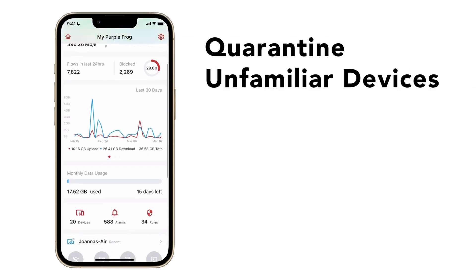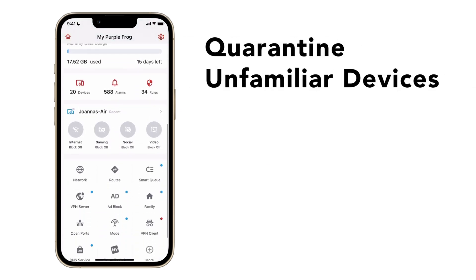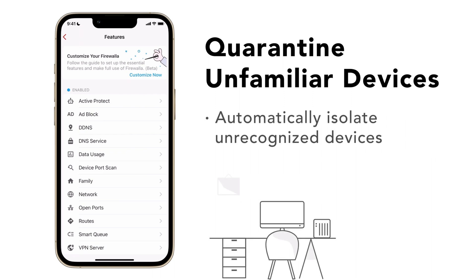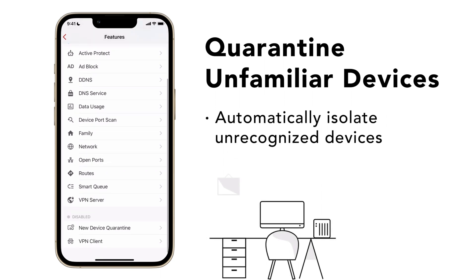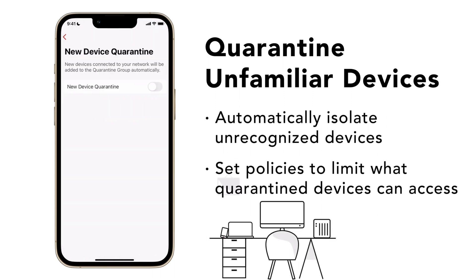Another way to organize your network is to turn on New Device Quarantine, which immediately places unrecognized devices into a separate device group if they join your network. This way, you can have full visibility of unfamiliar devices and set special rules to control their access.